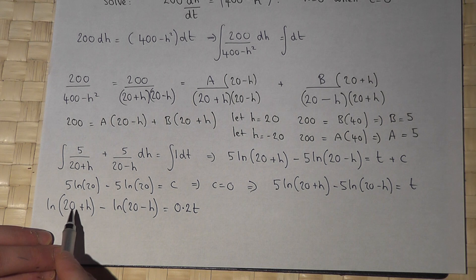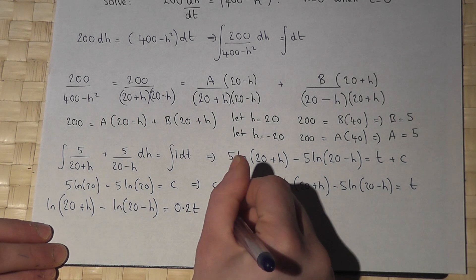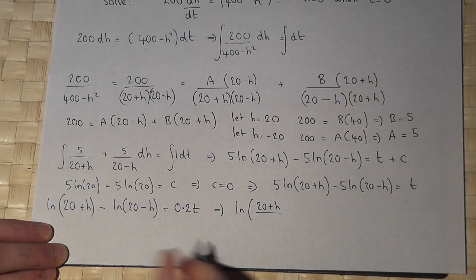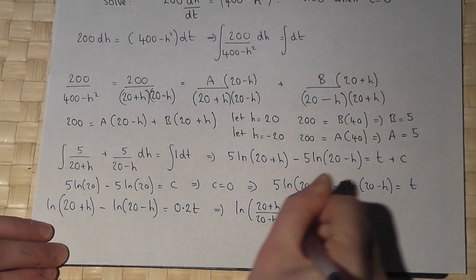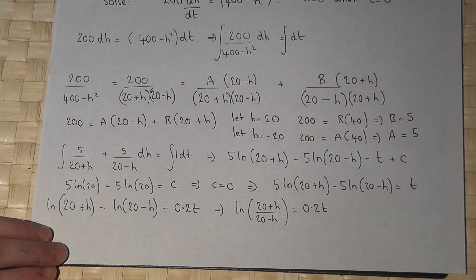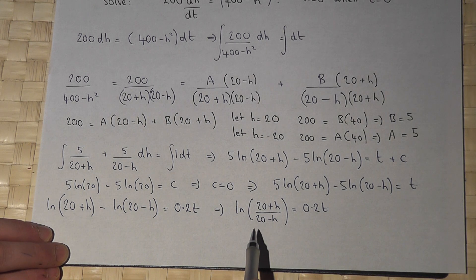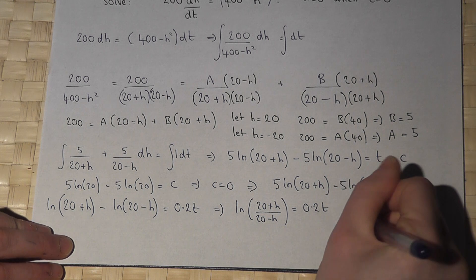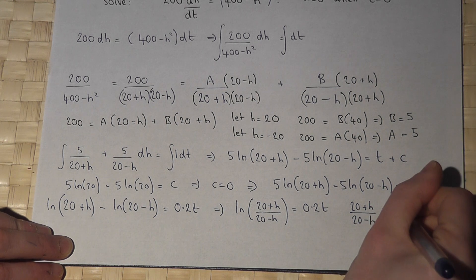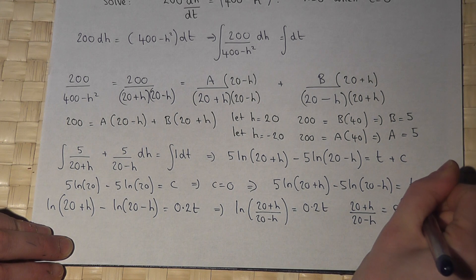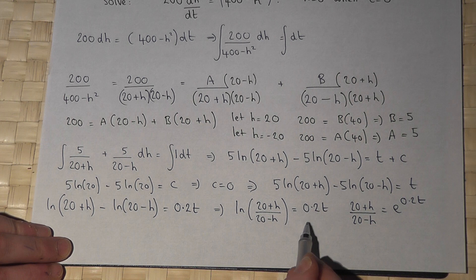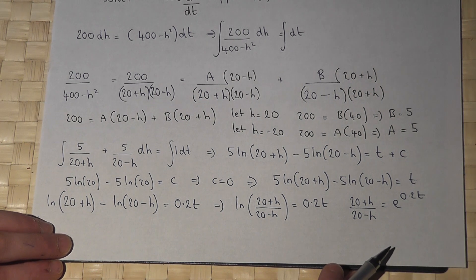I can then use the rules of logarithms to work out that ln of 20 plus h over 20 minus h equals 0.2t. I can now raise both sides to the power e, to get 20 plus h over 20 minus h equals e to the 0.2t. e to the power of ln cancels off. So this becomes e to the power of 0.2t.